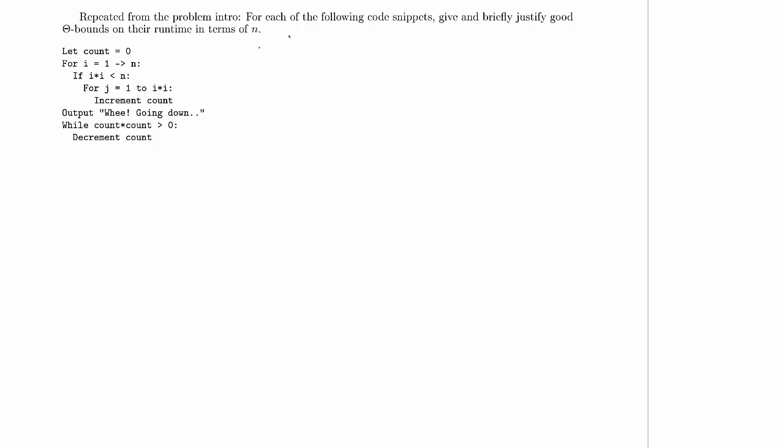And again, just like in the previous problem, we're looking at a piece of pseudocode, and we're going to give and briefly justify good theta bounds on it. And this piece of pseudocode is rather similar to the previous piece of pseudocode, so we're going to expect something somewhat similar to happen. We've got the same first line that still takes constant time, where we set count to 0.